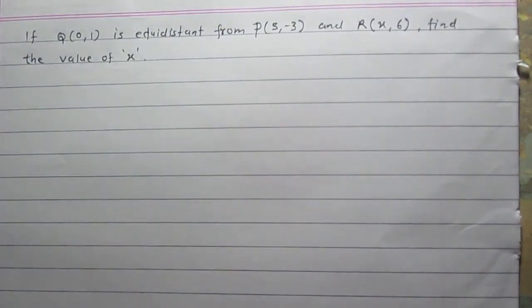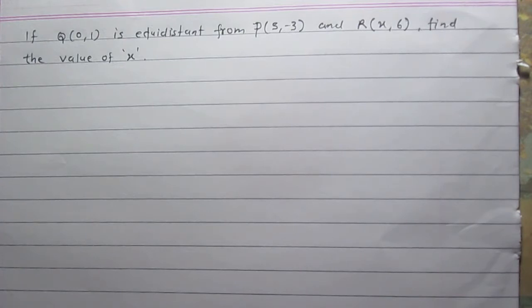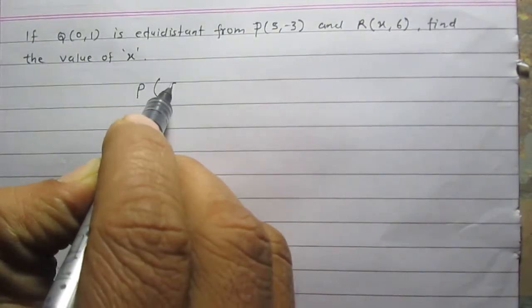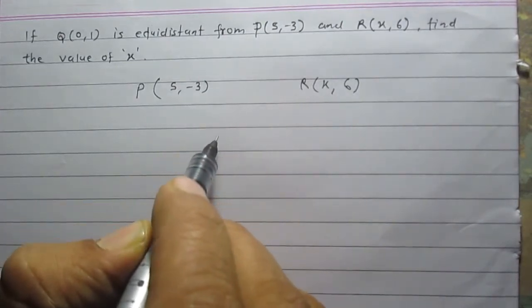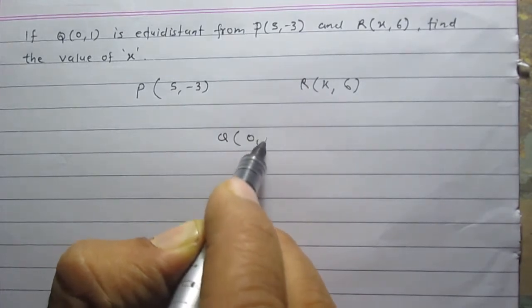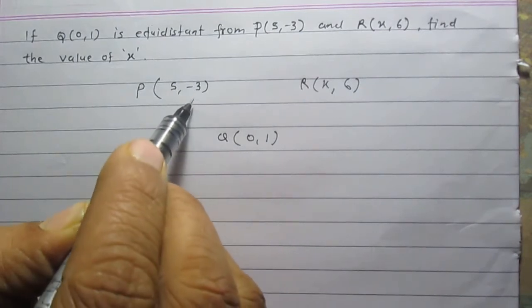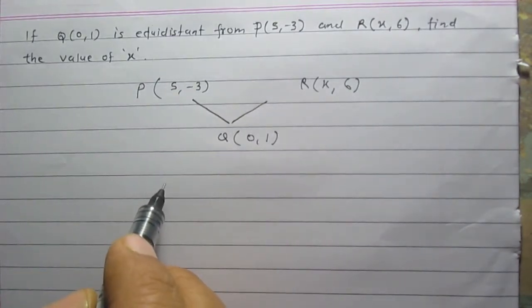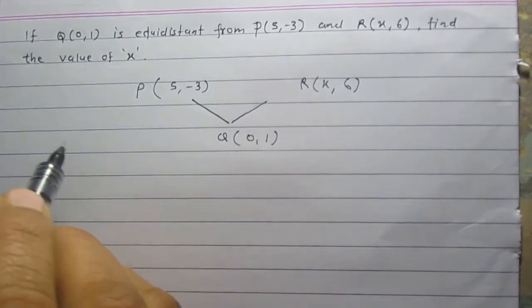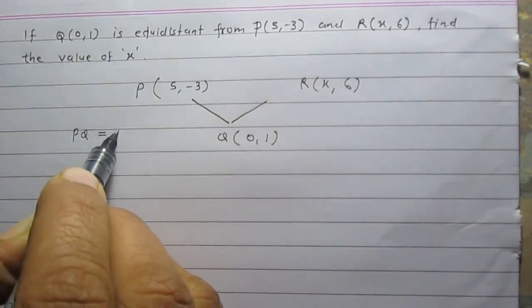If point Q with coordinates 0 and 1 is equidistant from point P with coordinates 5 and minus 3, and the point R with coordinates x and 6, then find the value of x. We are given three points: P(5, -3), R(x, 6), and Q(0, 1). We are given that Q is equidistant from P and R, so mathematically PQ is equal to QR.